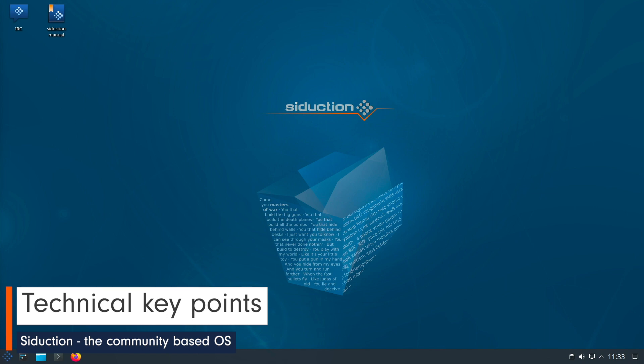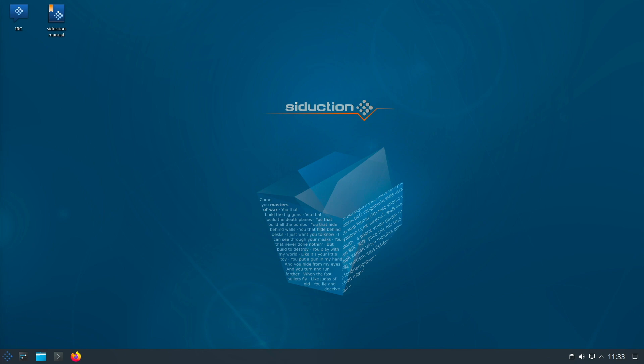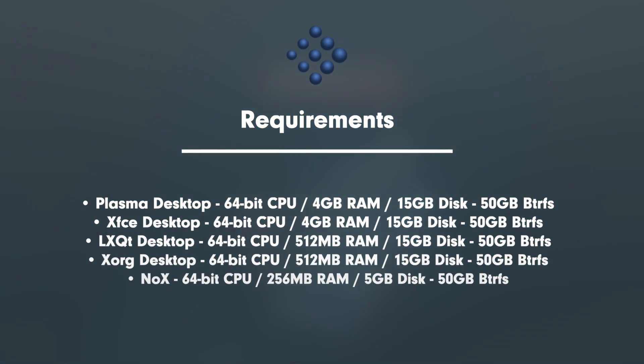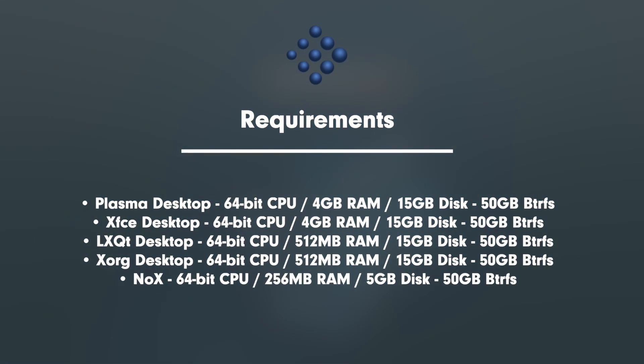Let's come to the technical key points. The minimum requirements vary depending on the desktop and variant. Siduction gives the following specs: 64-bit processor. Memory depends on your desktop: KDE Plasma at least 4GB of RAM, XFCE at least 4GB of RAM, LXQT at least 512MB of RAM, XORG at least 512MB of RAM.